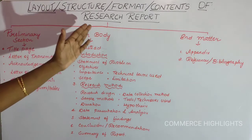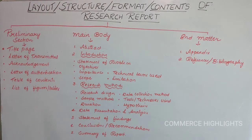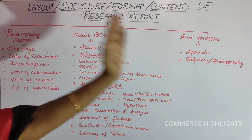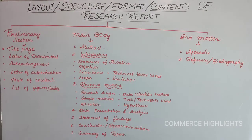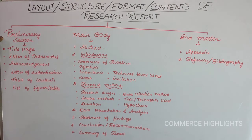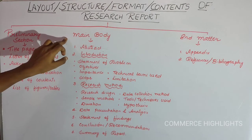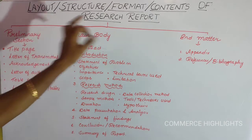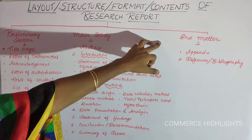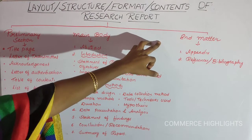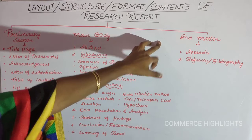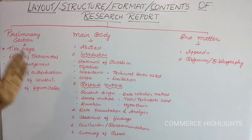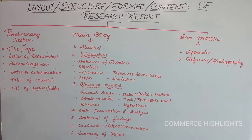This research report should include three sections: it should have a preliminary section, it should have a main body or textual section, and it should have an end matter or reference section. We will discuss each section one by one.